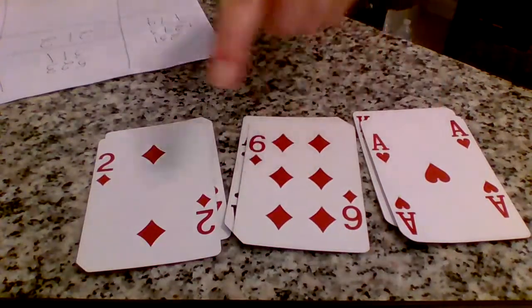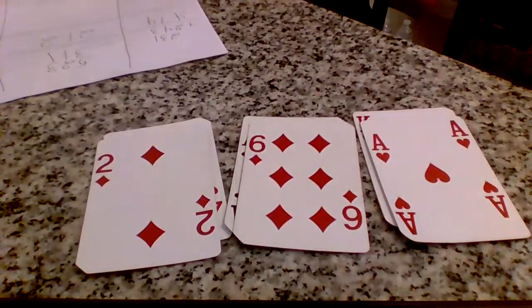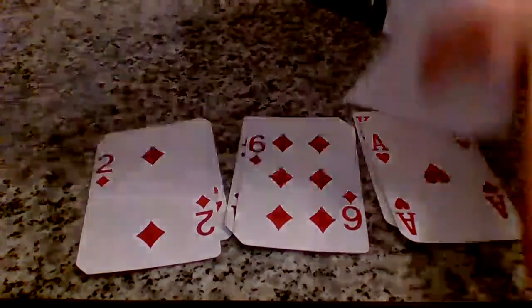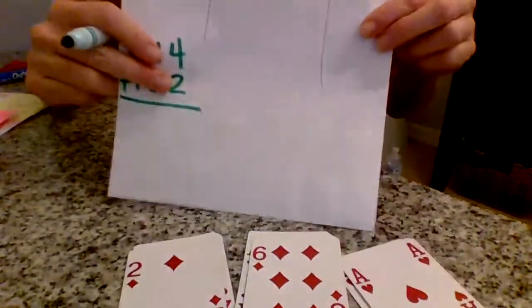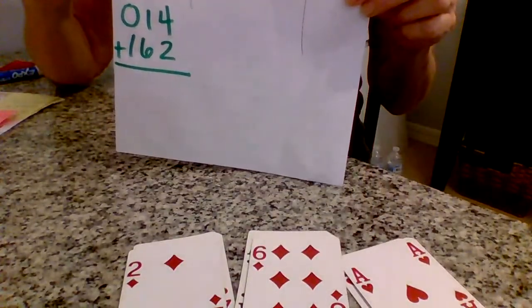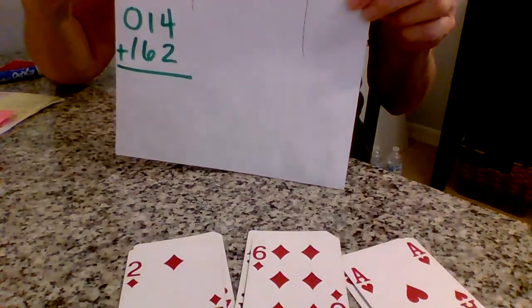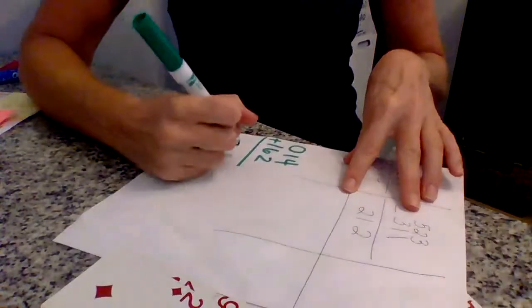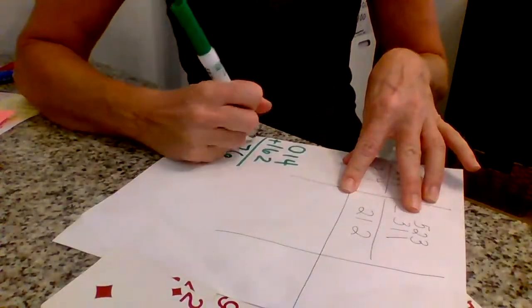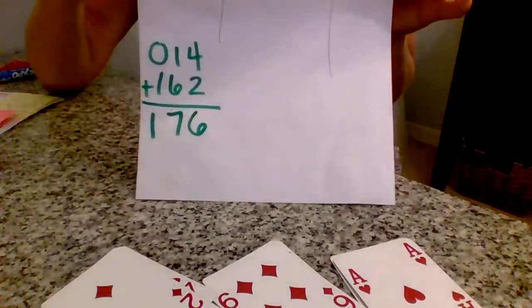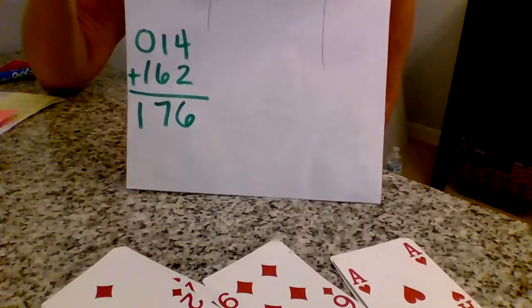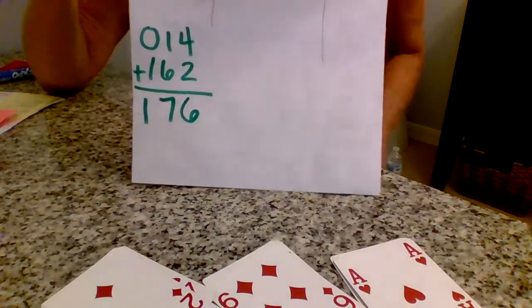Here is my math problem and then you can just add. 4 plus 2 is 6, 6 plus 1 is 7, 1 plus 0 is 1. My answer is 176. Let's do a subtraction, greater number on top. Use your cards.